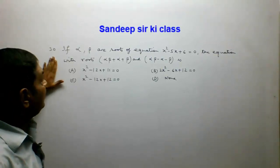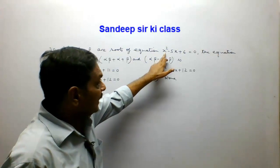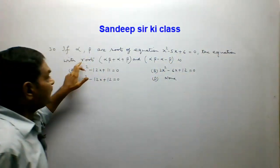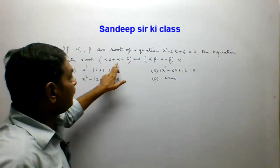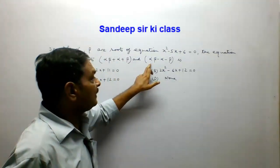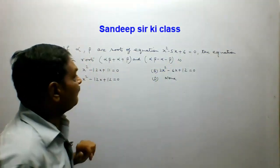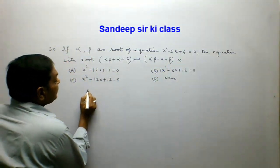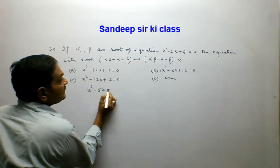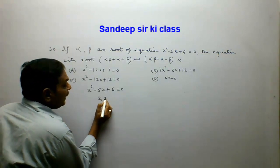Question number 30. If alpha and beta are the roots of the equation x squared minus 5x plus 6 equals 0, the equation with roots alpha·beta plus alpha plus beta and alpha·beta minus alpha minus beta is required. Four options are given. We have seen that this equation has roots 3 and 2, so alpha equals 3 and beta equals 2.